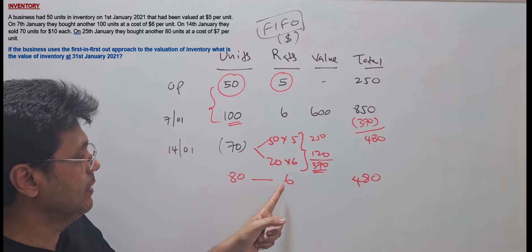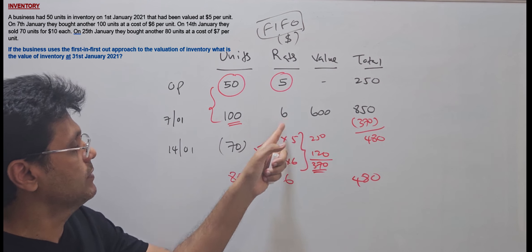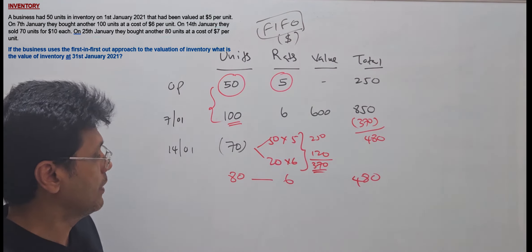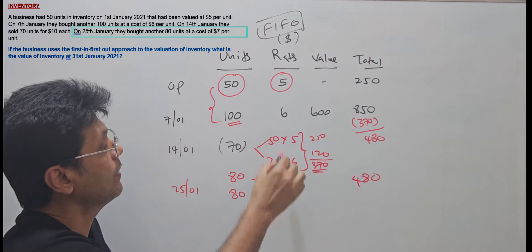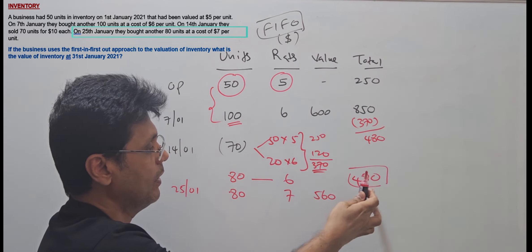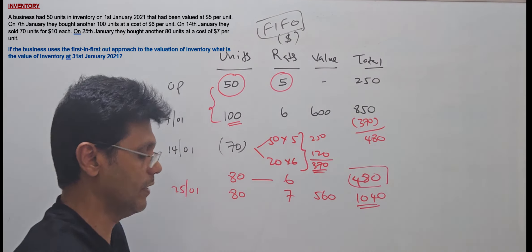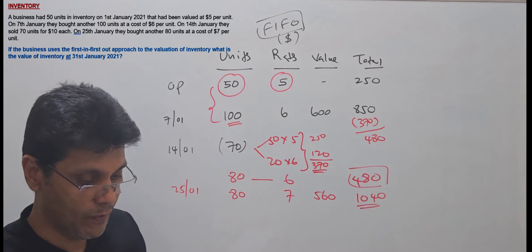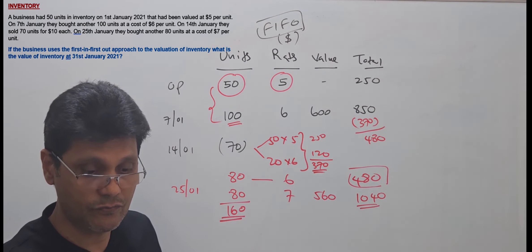Alternatively, you can take $80 times $6 directly, giving the closing inventory value of $480. On 25th January, they bought another 80 units at the rate of $7, amounting to $560. Adding the closing balance of $480 plus the new purchases of $560, the total is $1,040. So the total stock quantity is 160 units, with a valuation of $1,040. This is the answer for this question.